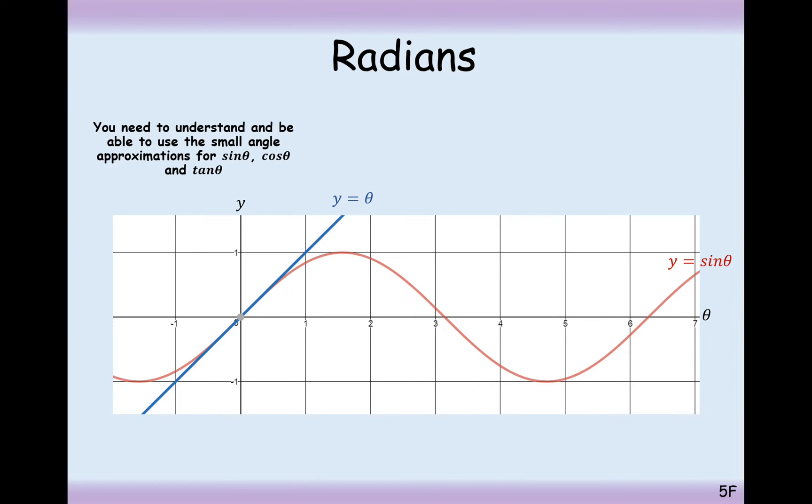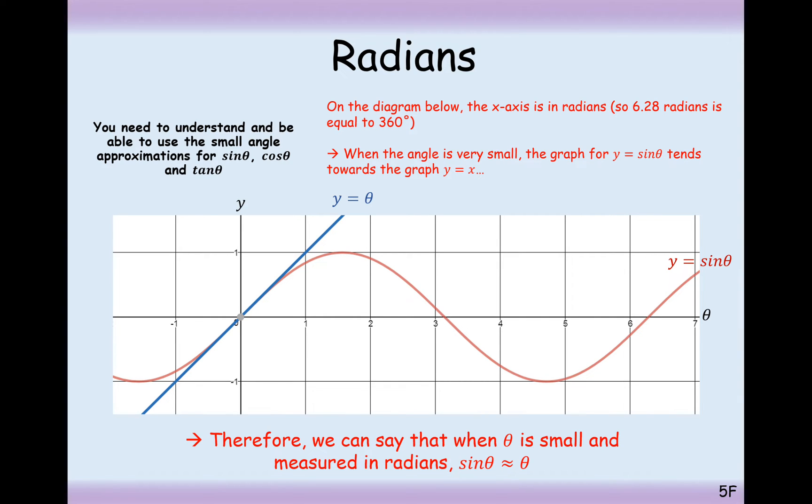We're going to be small angle approximating sine, cos, and tan. That basically means that as the theta value is small or very close to zero, we can use some approximations instead of calculating sine, cos, and tan on our calculators. What we're first going to do is compare the sine curve to the line y equals theta. And we can see here at zero, it's almost identical if not very similar indeed. When the angle is very small, the sine graph of y equals sine theta tends towards the graph y equals theta. Therefore, we can say that when theta is small and measured in radians, sine theta is approximately equal to theta.